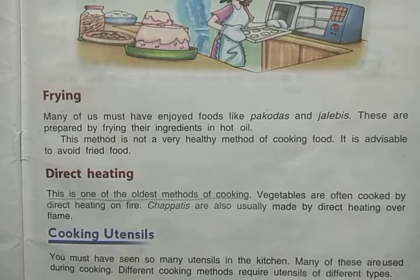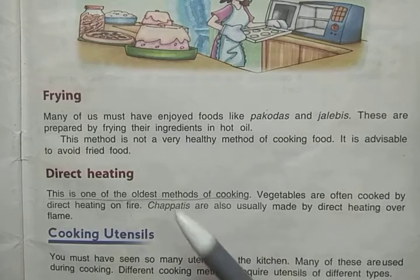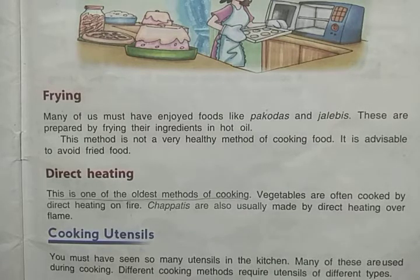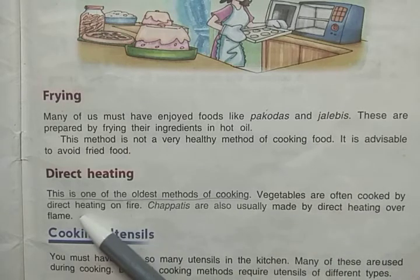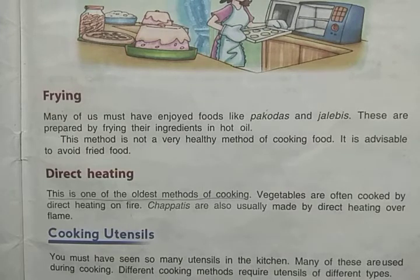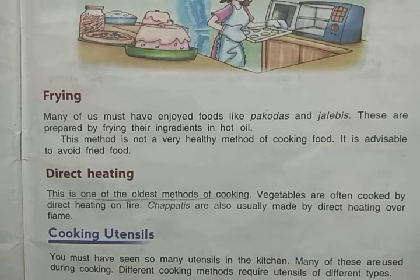Direct heating is the oldest method — it is the first method of cooking that early man learned. Whatever food item was available, such as flesh or other items, was cooked directly over fire. Vegetables are also often cooked by direct heating on a flame.